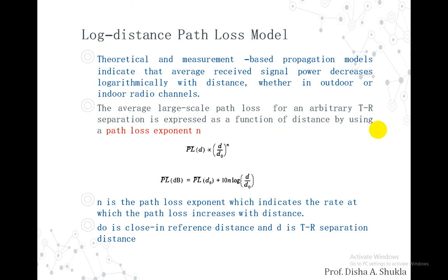Theoretically and measurement-based propagation models indicate that the average received signal power decreases logarithmically with distance, whether it is an indoor or outdoor radio channel. That is, practically and based on theories, it has been indicated that the average received signal power — the power that we receive at the receiver's end — decreases logarithmically as the distance increases.